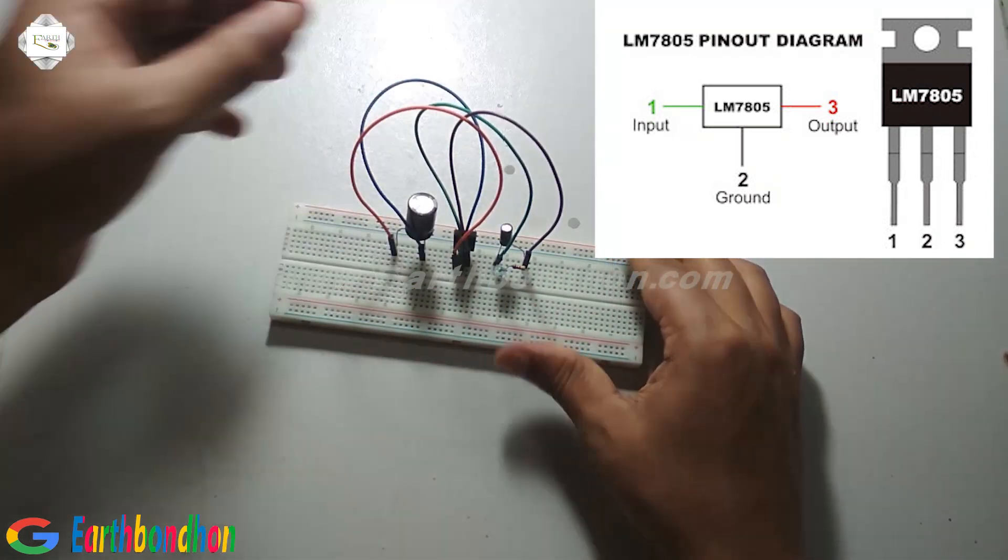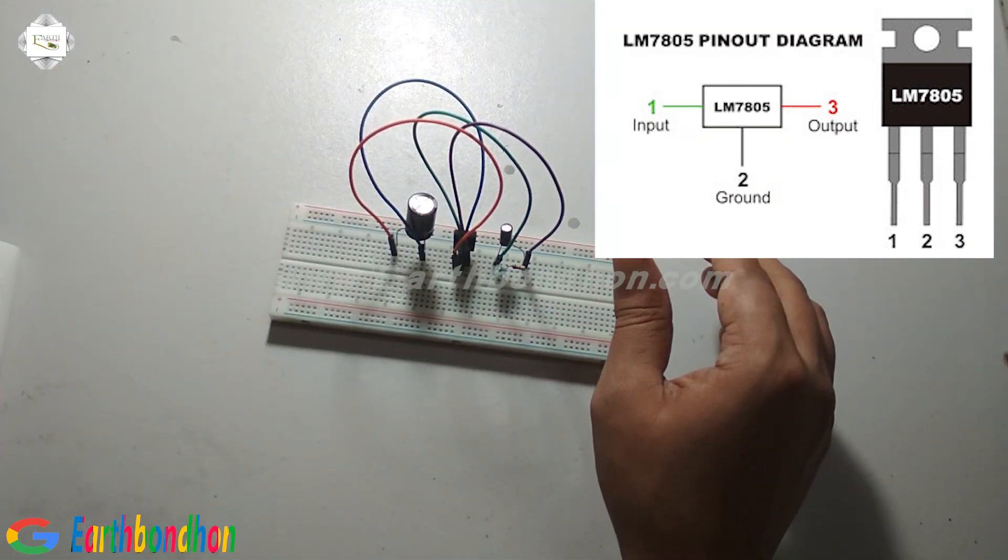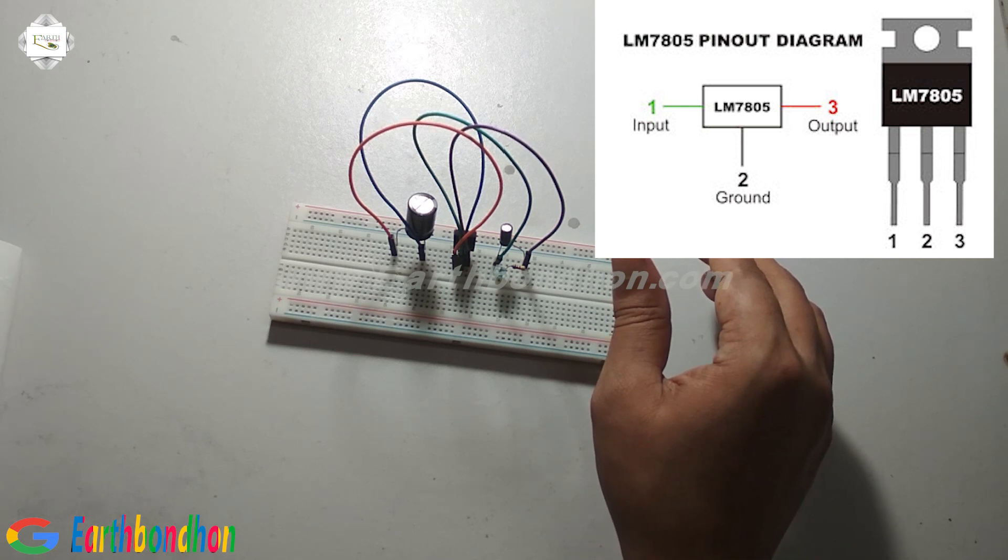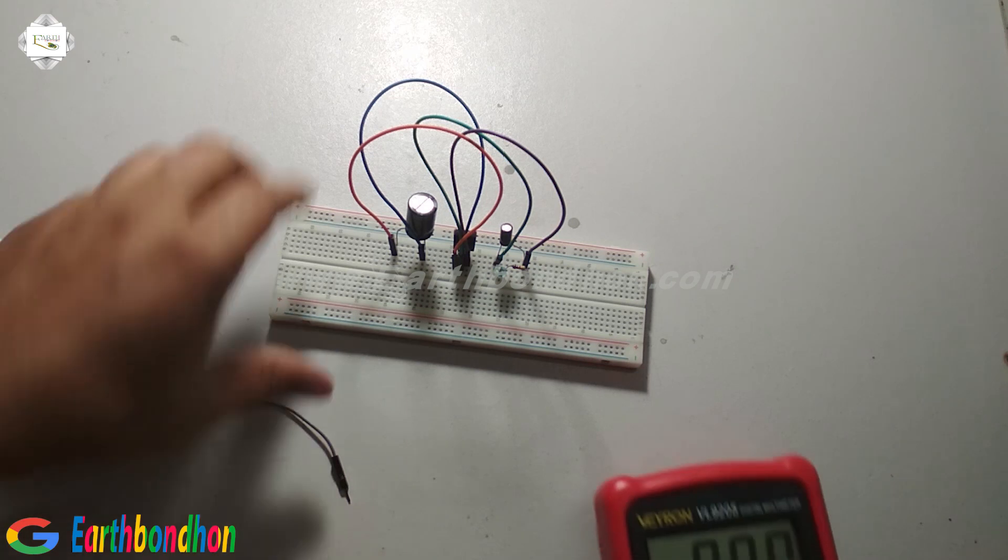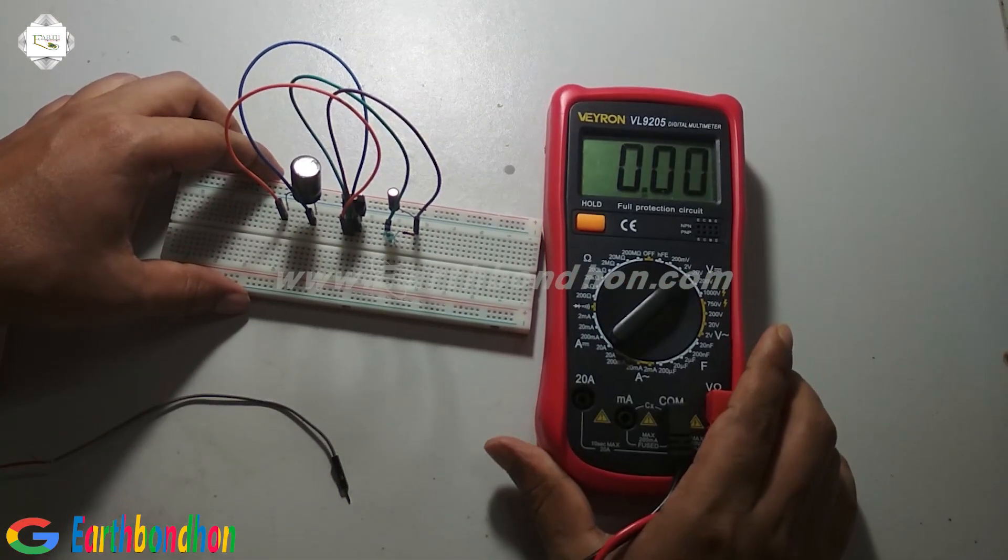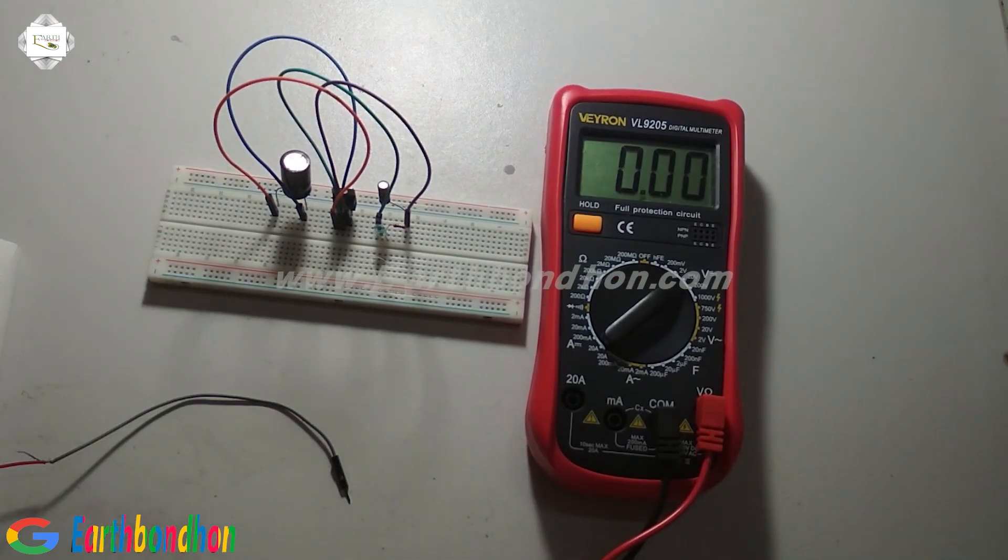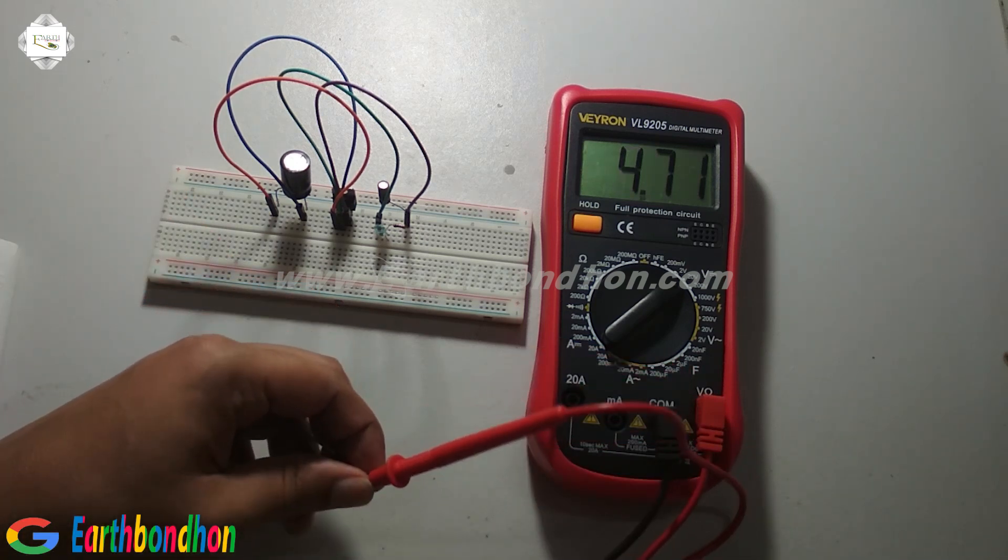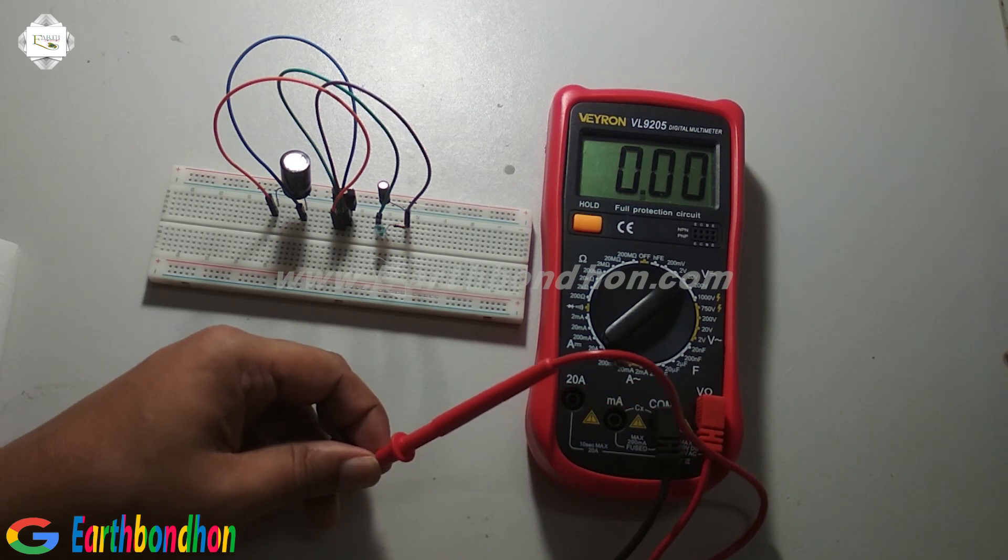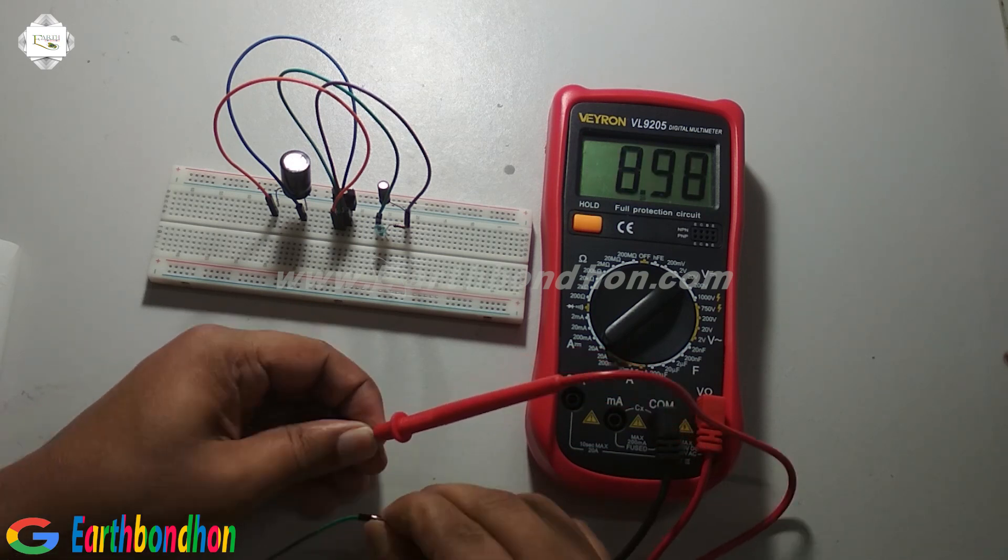Now I am supplying 9 volts input, and we get 5 volt output. Using the multimeter to check the voltage. This is 9 volts at the input.